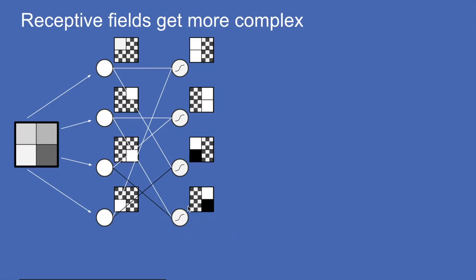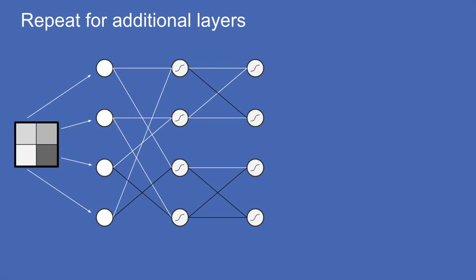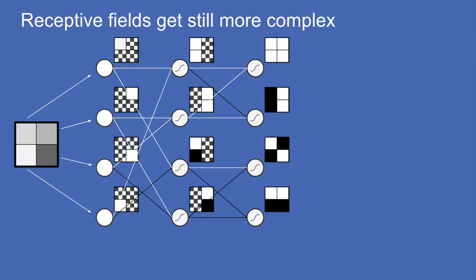For example, one neuron is attached to the upper-right and lower-right pixels with a weight of minus one for the lower-right pixel, so it's most active when that pixel is black. Because we were careful about how we created that first layer, we can create another layer on top of it the same way — the output of one layer being the input to the next. We can repeat this three, seven, or 700 times; each time the receptive fields get even more complex, covering all pixels.